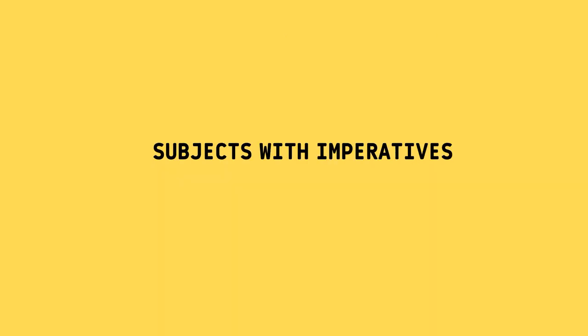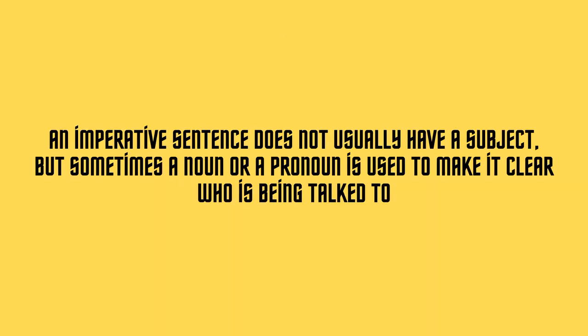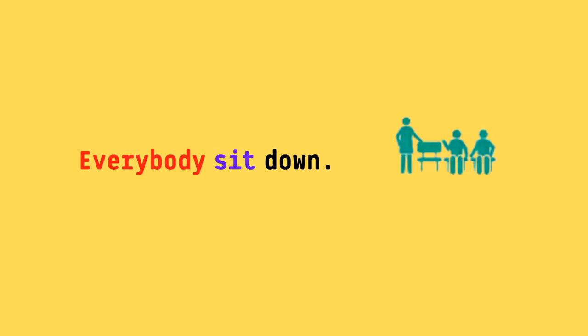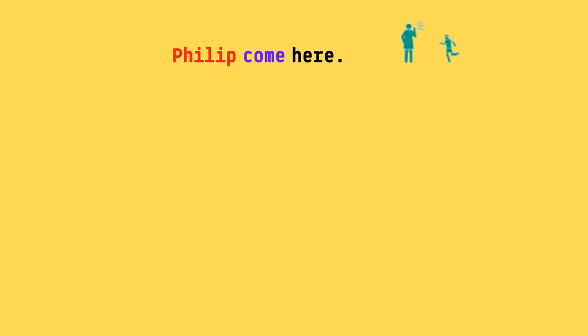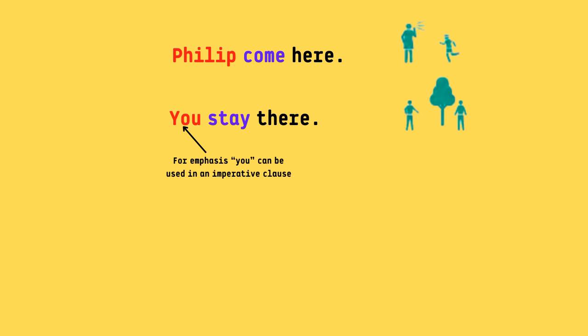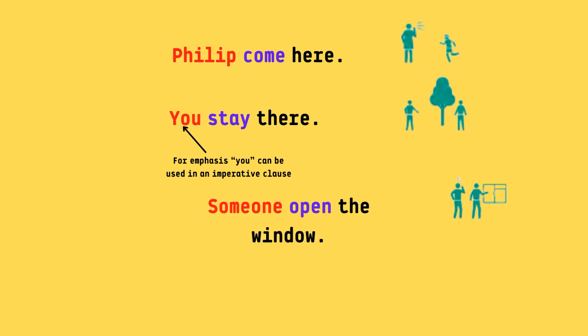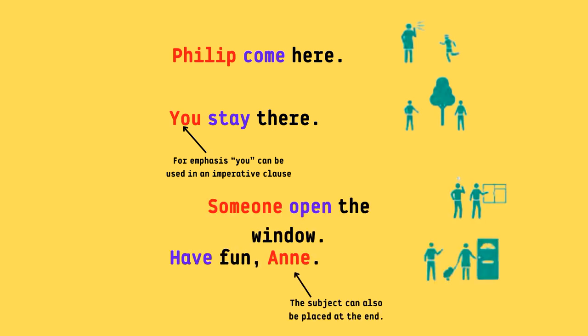Subjects with imperatives. An imperative sentence does not usually have a subject, but sometimes a noun or a pronoun is used to make it clear who is being talked to. For example: Everybody, sit down. Further examples: Phillip, come here. You, stay there. For emphasis, you can be used in an imperative clause. Someone, open the window. Have fun, Anne. The subject can also be placed at the end.